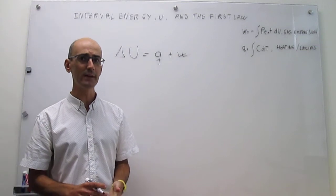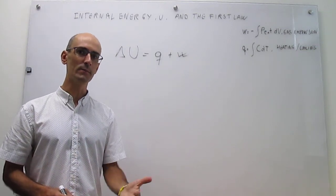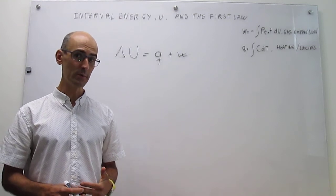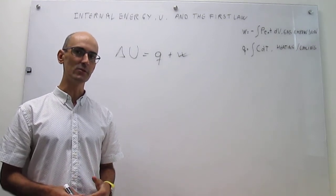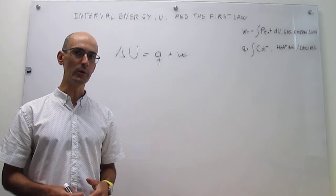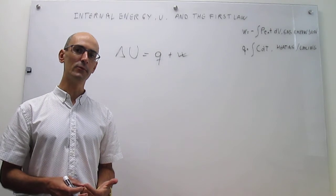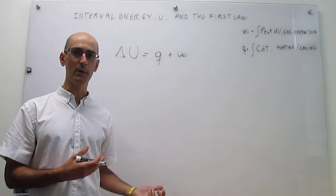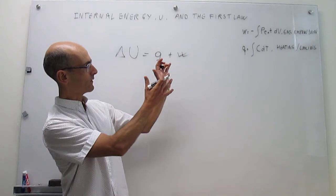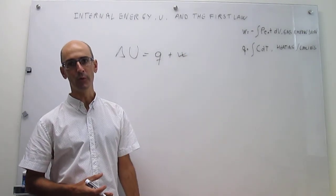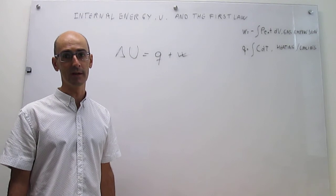Importantly, we have defined here a way to do the bookkeeping of the energy of an object, and that's something that is going to be quite important going forward. In the next video, we're going to see an example of how the first law applies to something quite simple that we know how to do with that formulation for work and heat, which is going to be an isothermal gas expansion.